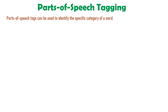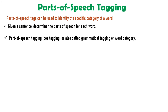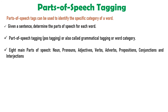Parts of Speech Tagging can be used to identify the specific category of a word. Parts of Speech Tagging, also called grammatical tagging or word category identification, is the process of marking words in a text as corresponding to a particular part of speech based on its definition and context. The parts of speech explain how a word is used in a sentence. There are eight main parts of speech: nouns, pronouns, adjectives, verbs, adverbs, preposition, conjunction, and interjection.